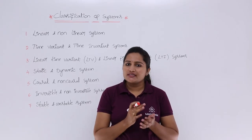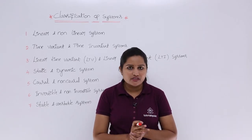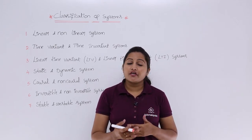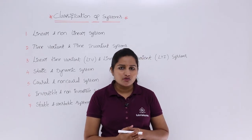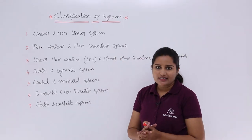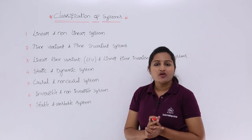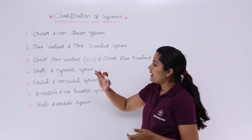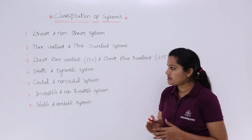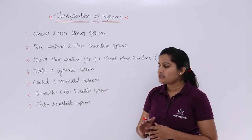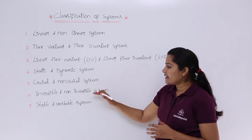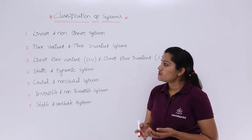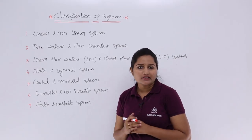In this video we are going to discuss about classification of systems. Up to last class we discussed classification of signals, and like that we are going to classify systems also. We are having 7 different classifications: linear and non-linear system, time variant and time invariant system, linear time variant, linear time invariant system, static and dynamic system, causal and non-causal system, invertible and non-invertible system, and stable and unstable system.